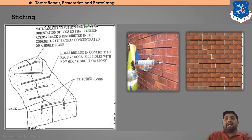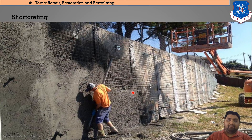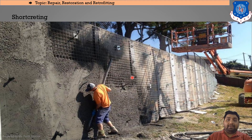Stitching means to stitch the cracks. This is the actual stitching process done on site. Shotcreting is a form of plaster — if there is a crack in the wall or outer boundary layer, you can reinforce it and then shotcrete it with concrete. This process is known as shotcreting.